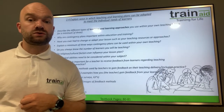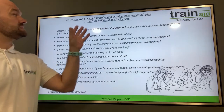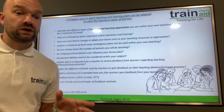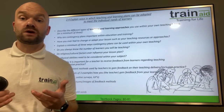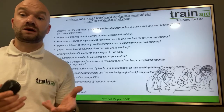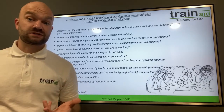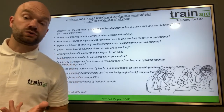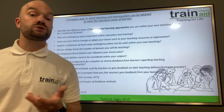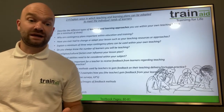We're moving on to criteria 2.4: explain ways in which teaching and learning plans can be adapted to meet the individual needs of learners. Think about the different ways you adapt and change your teaching and learning approaches to help learners stay on track or to stretch and challenge them. Consider contingency plans for when things perhaps go wrong within your teaching or training — approaches that have worked well, ways you've adapted resources if things aren't working, and whether you have a backup plan.